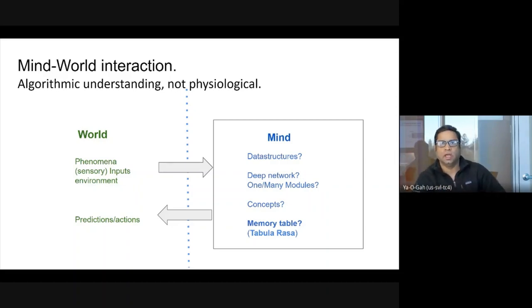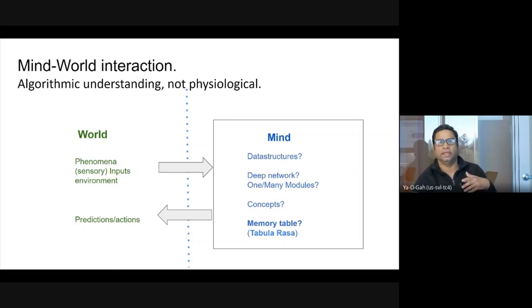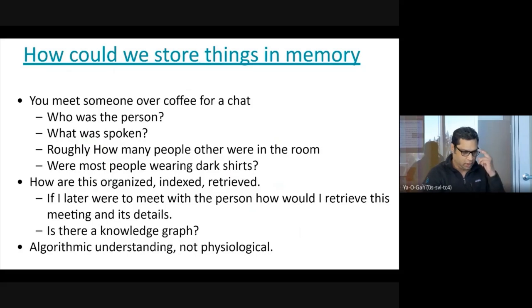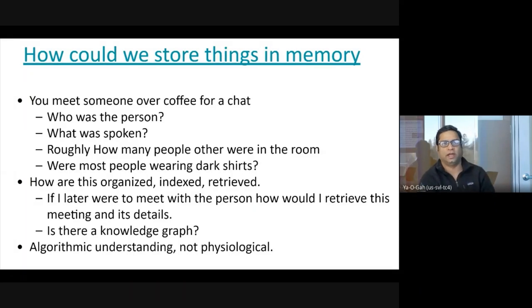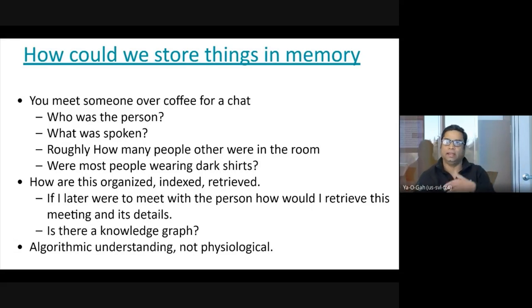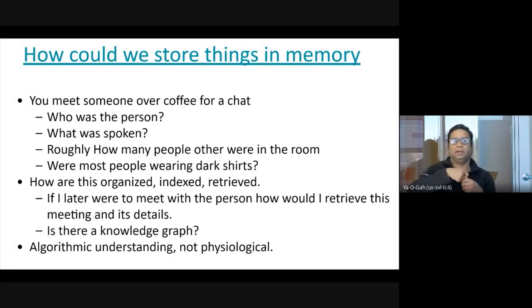How do we form new concepts? How do we remember things — is there some memory table? There's this ancient mnemonic called tabula rasa, which thinks of the mind as a table born with a clean slate, and entries are added as we grow up interacting with the world. Let's focus first on an abstract understanding of how we remember things. Say you just met someone for coffee — how do we remember what we talked about, who the person was, and more importantly, how is this organized and indexed? And if we meet the person again, how do we recall and retrieve the previous meeting so we can decide what to say?